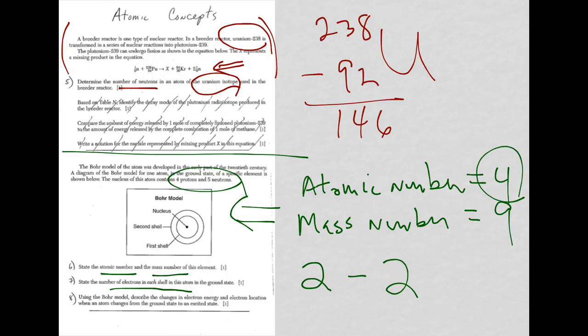Finally, in question eight, it says, Using the Bohr model, describe the changes in electron energy and electron location when an atom changes from the ground state to the excited state.